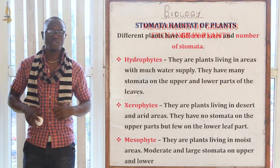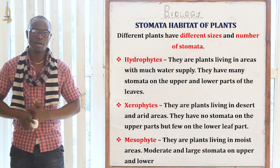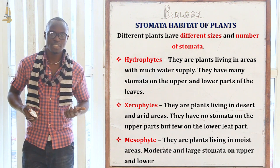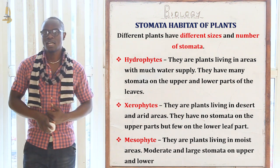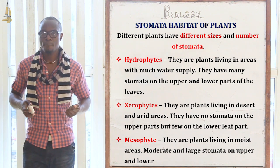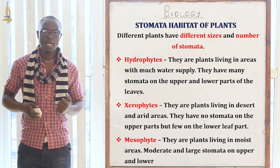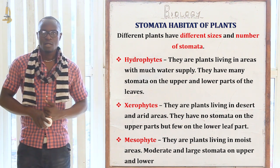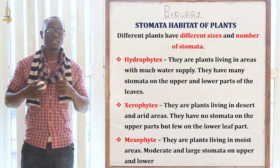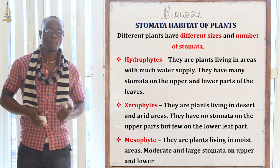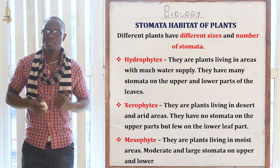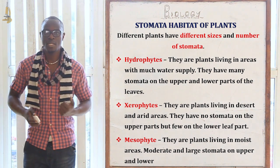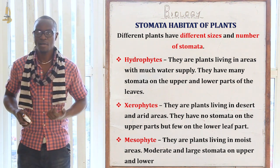Stomata vary with the specific habitat of the plant — hydrophyte, mesophyte, or xerophyte — and different plants have different sizes and numbers of stomata. Hydrophytes have very many stomata on both the upper and lower parts of the leaf. Xerophytes have very few or no stomata on the upper or lower parts of the leaf. Mesophytes, which live in moist areas, have stomata of medium to large size found on the upper or lower parts of the leaf.